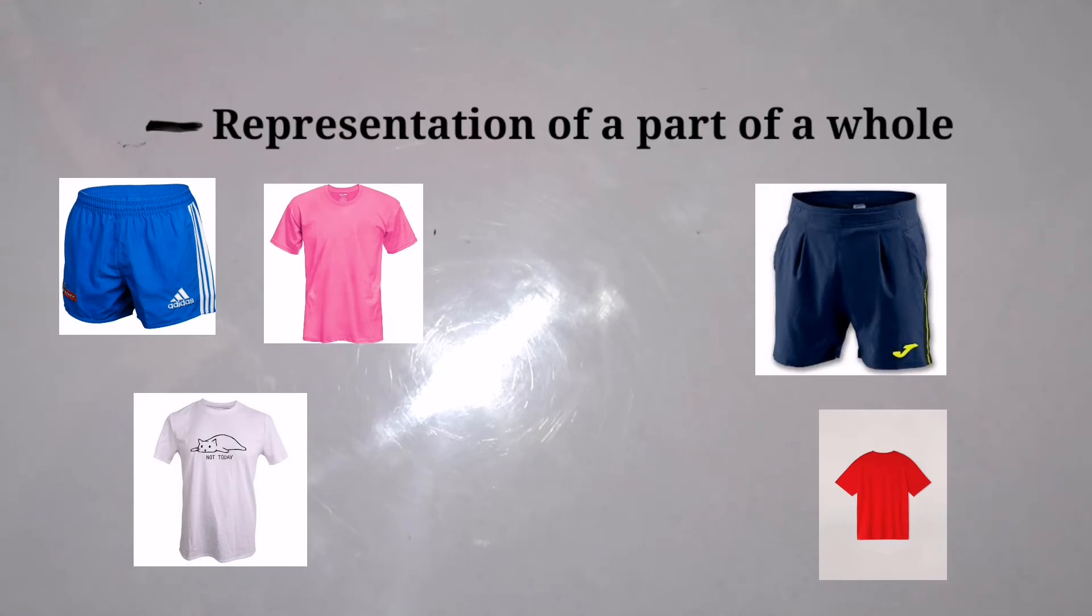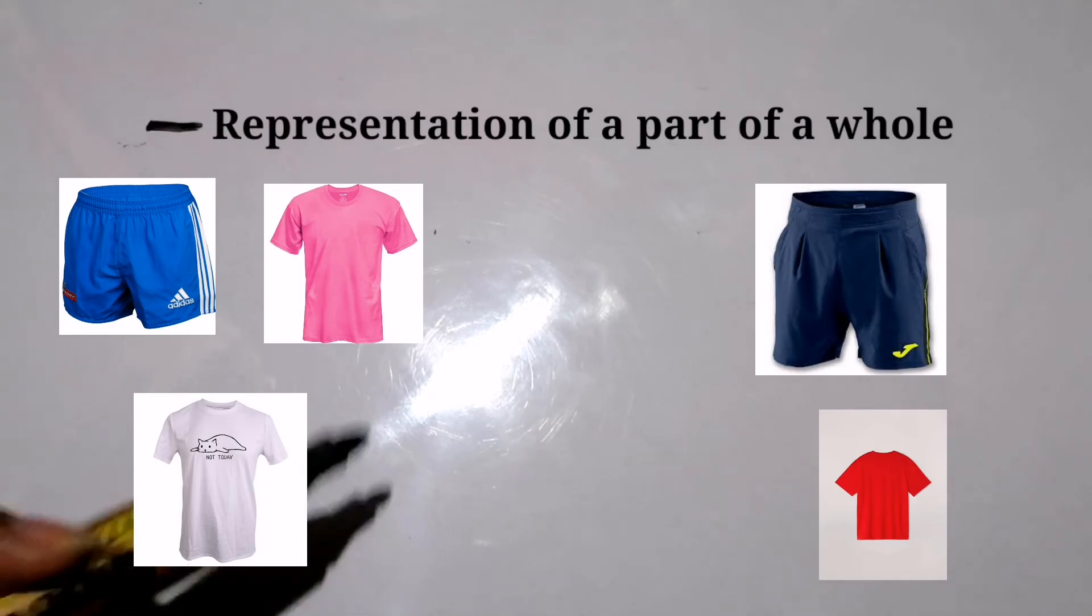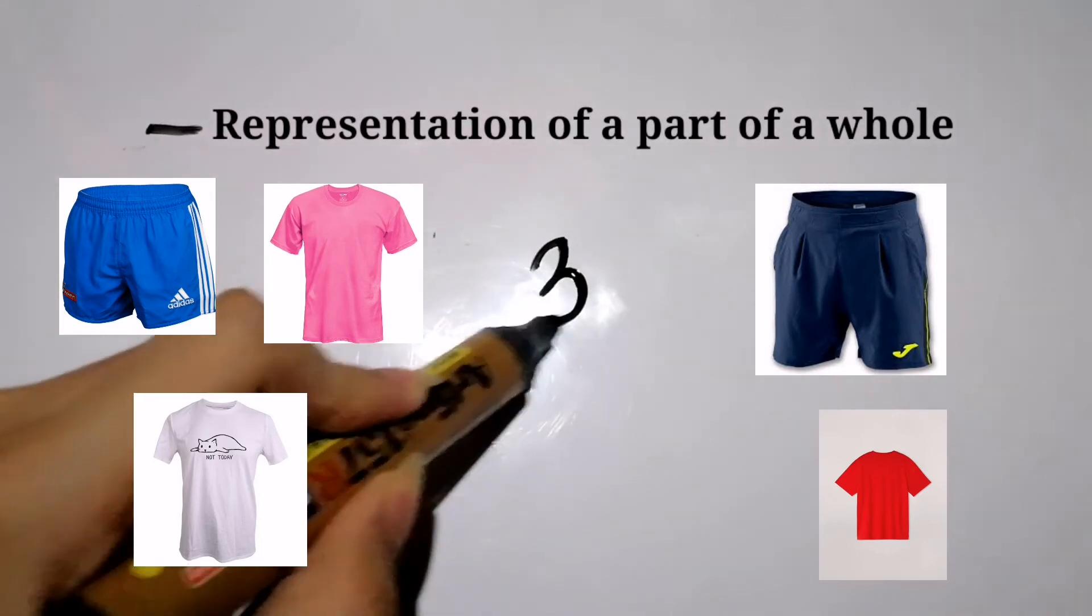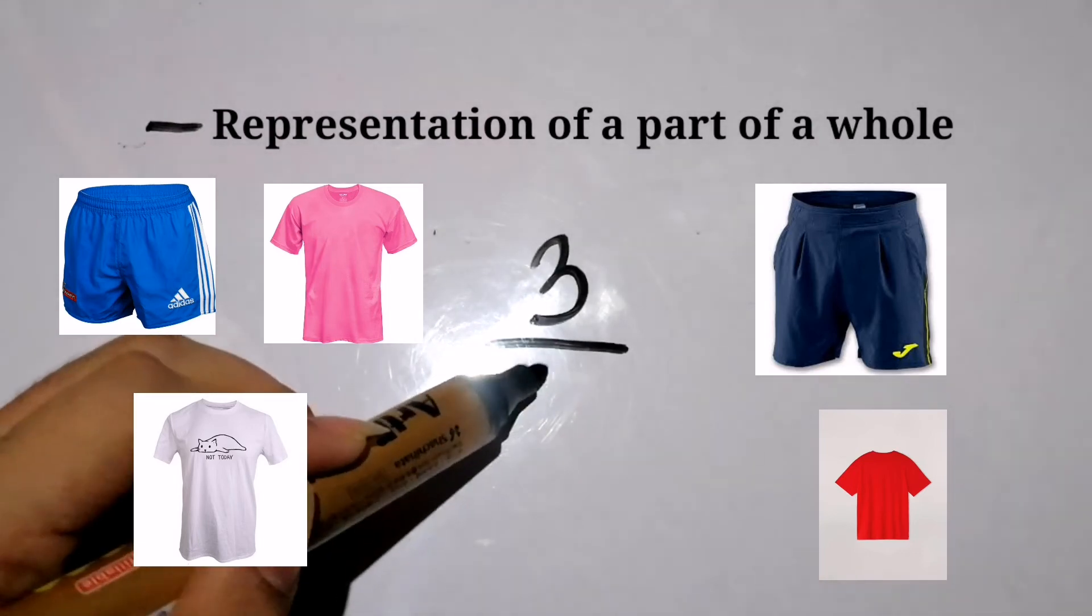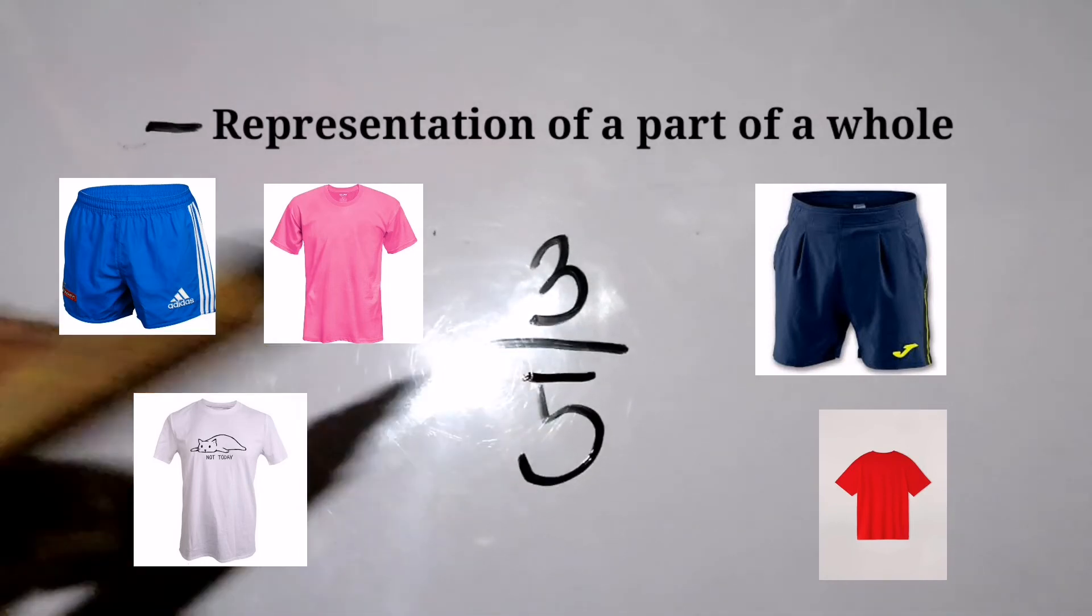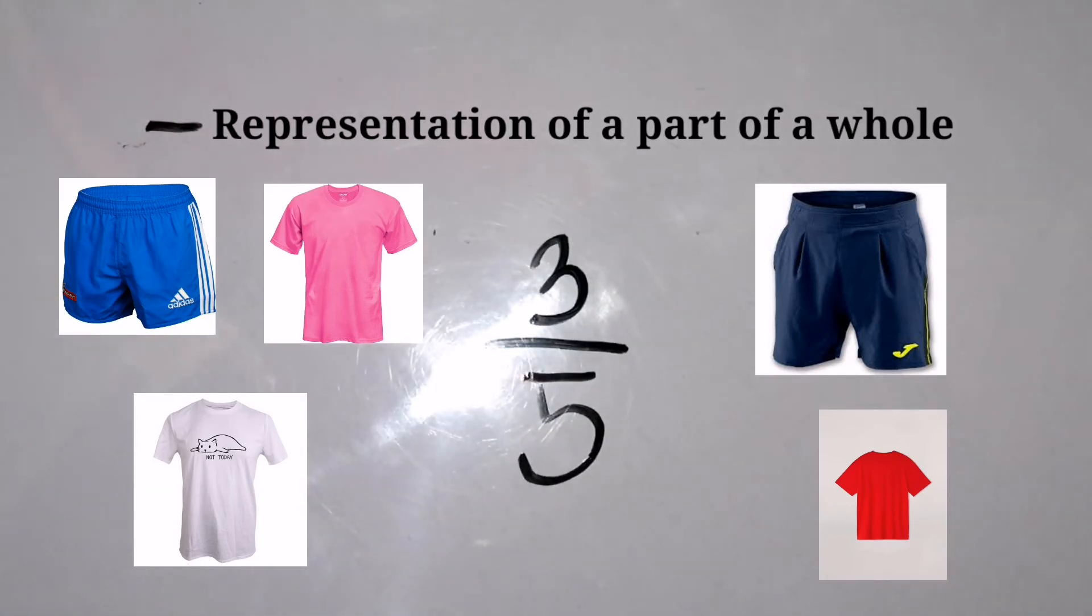That will be the number of shirts that we are considering within the group, which is three, out of the total number of clothes that we have in that group, which is five. Therefore we have three over five, or three-fifths, as a fraction for the number of shirts. Meaning to say, three-fifths of the clothes are shirts.